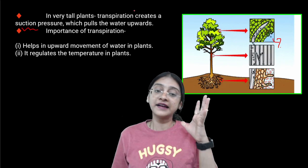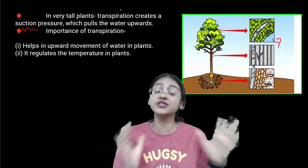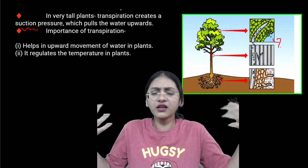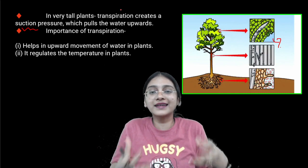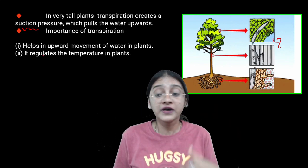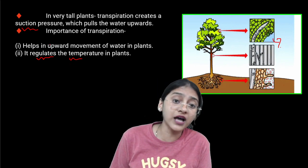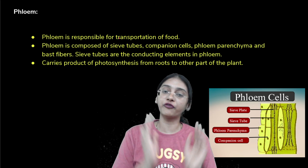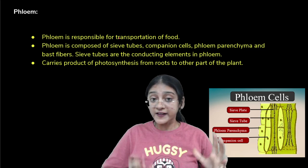Transpiration has other important functions as well. Since transpiration is essentially evaporation of water from plants, it acts like a cooling effect — similar to sweating in our bodies. Just as sweating regulates our body temperature, transpiration regulates the temperature of plants. So transpiration both causes upward movement of water and regulates temperature in plants.